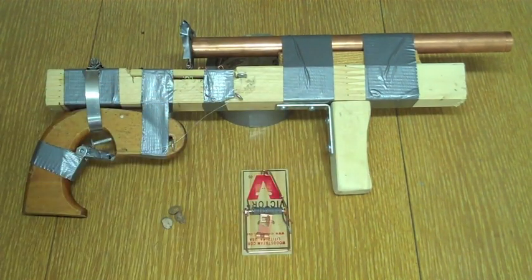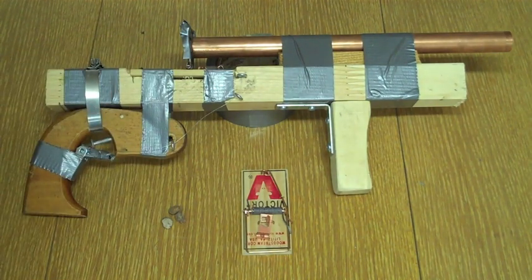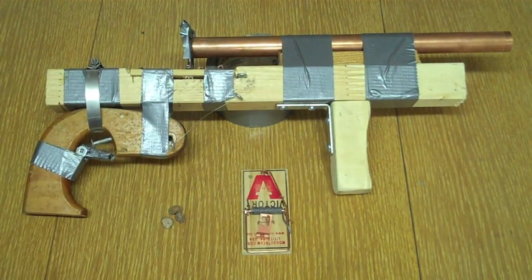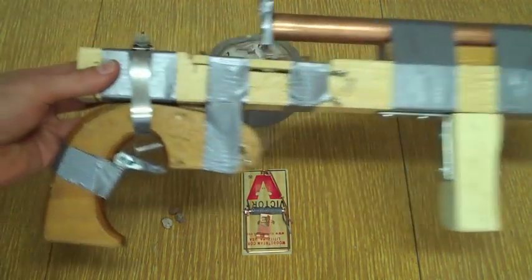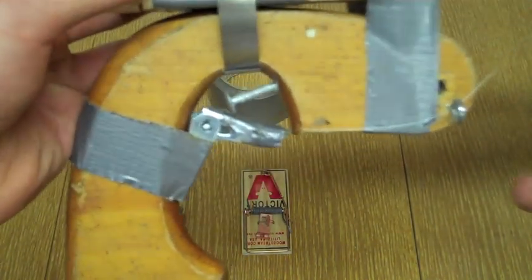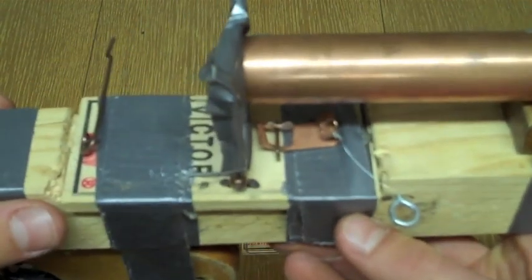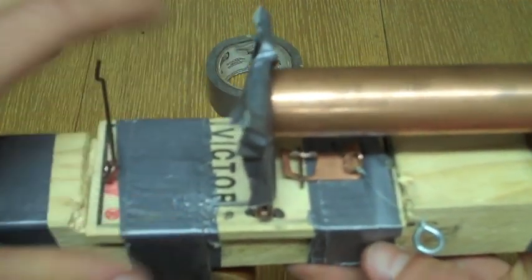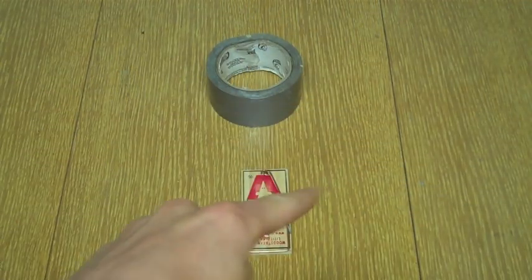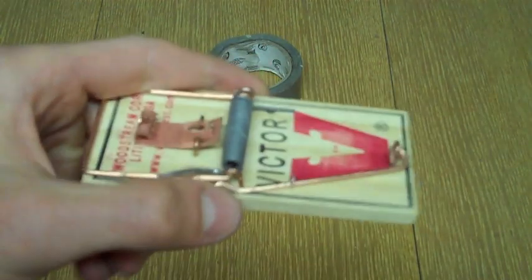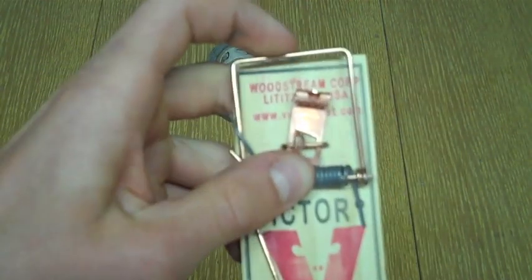And then the main assembly is the tough part, so I'll bring it up a bit closer here so you can see. For the trigger assembly, what I've done is... first of all, I'll start with the mousetrap actually. So what we're using is a regular mousetrap, just like this one here. Wooden mousetrap with the metal piece, none of the fancy ones.